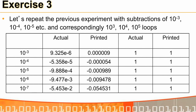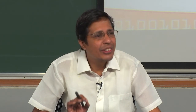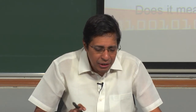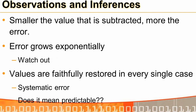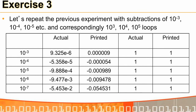The error grows exponentially — every time the subtracted value decreases by a factor of 10, the accumulated error grows by 10. When subtract-then-add is performed, the errors are always faithfully restored, meaning the error is systematic and predictable. Interestingly, the more accurate we try to be by using smaller increments, the larger the accumulated error becomes.